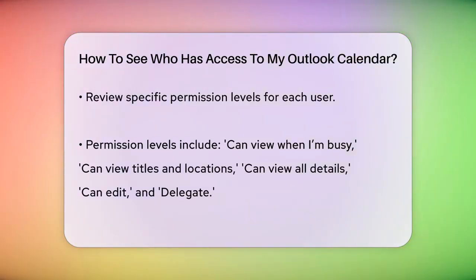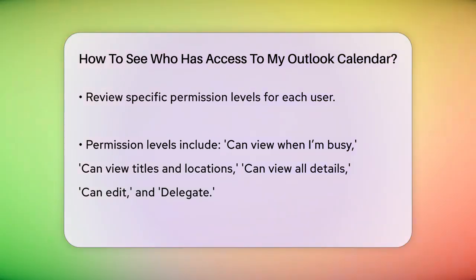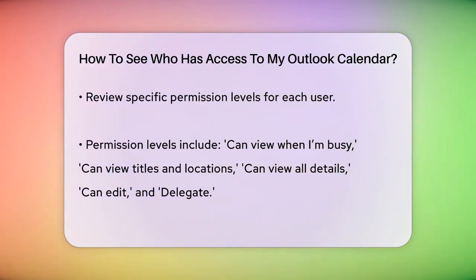If you're using Outlook on the web, the process is similar. Log into Outlook on the web, click on the Calendar icon, and then click on the Share icon. Here, you can see who you're sharing your calendar with and what permissions they have.